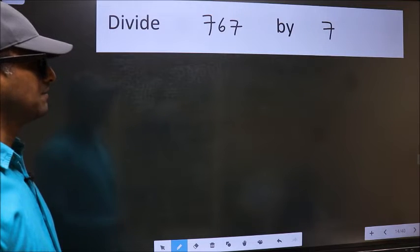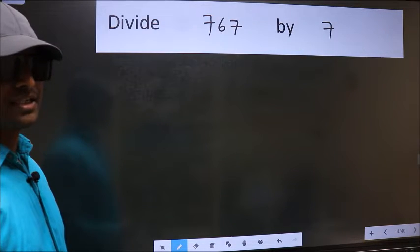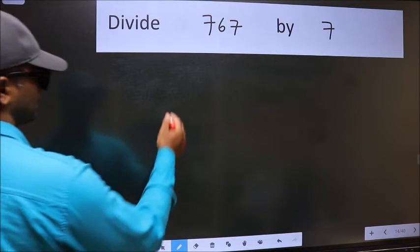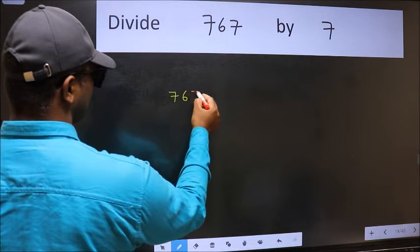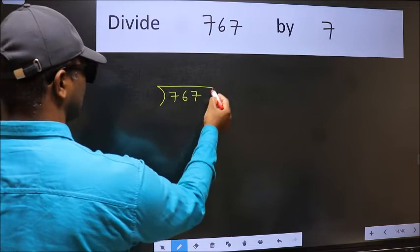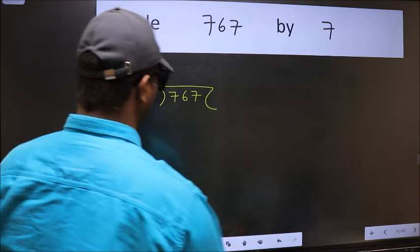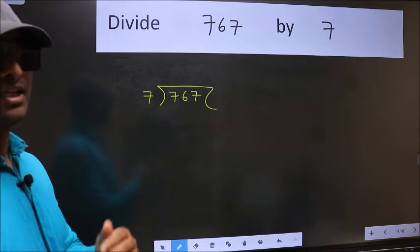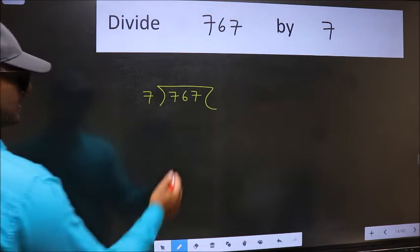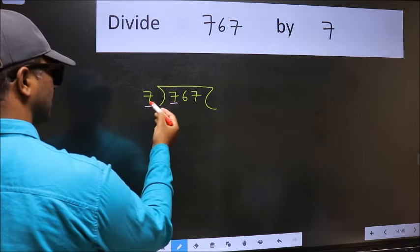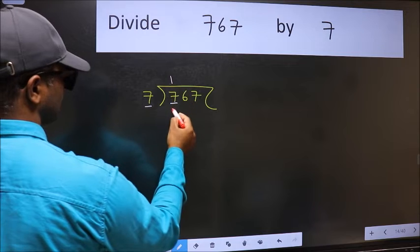Divide 767 by 7. To do this division, we should frame it in this way: 767 here and 7 here. This is your step 1. Next, here we have 7 and here 7. When do we get 7 in the 7 table? 7 once 7.